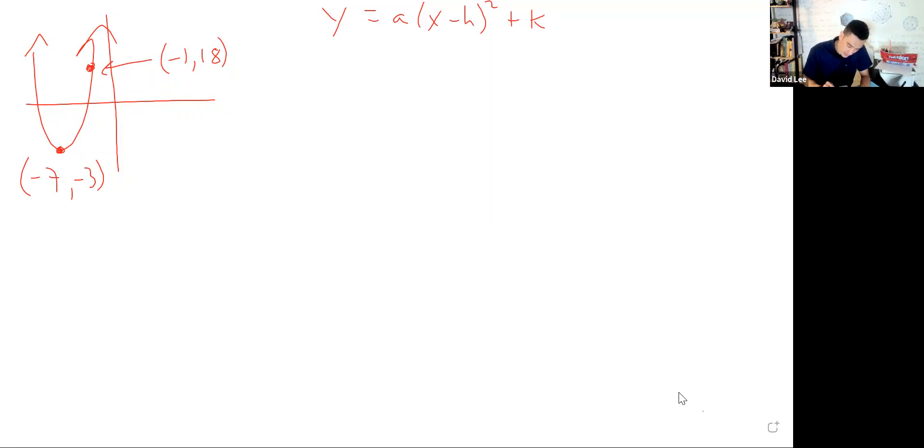But let's see, we know what h and k are. This is going to be h here, that's negative 7. And then k is negative 3. Let's make these changes, plug in h and k, and update our equation.